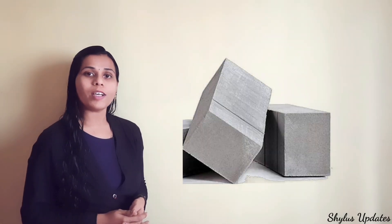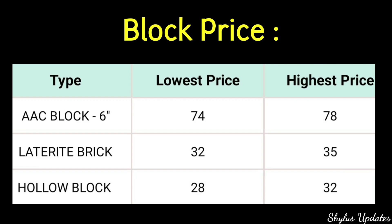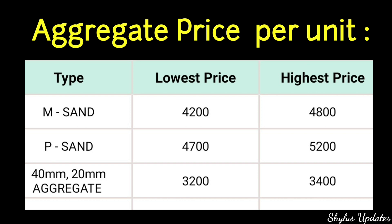Price list of blocks per block. Type, lowest price, highest price. AAC block 6 inches is from Rs.74 to Rs.78. Laterite brick is from Rs.32 to Rs.35. Hollow block is from Rs.28 to Rs.32.